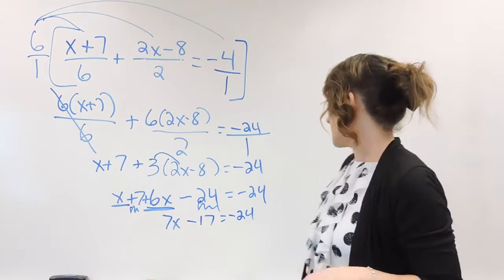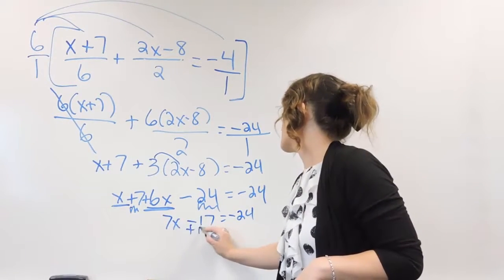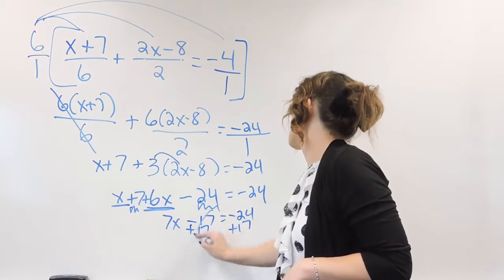We're almost done here, so we need to isolate the variable, which means the next thing we need to do is add 17 to both sides.